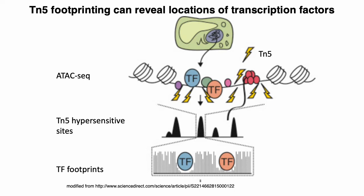The idea of TN5 footprinting is that the signature, or essentially the shape of the reads mapped in that particular region, reflects the size and the binding mechanism of the transcription factor. People are able to do analyses of the shapes of these read distributions around these TF binding sites in order to learn something about the biophysical properties of transcription factors and how they bind to DNA.